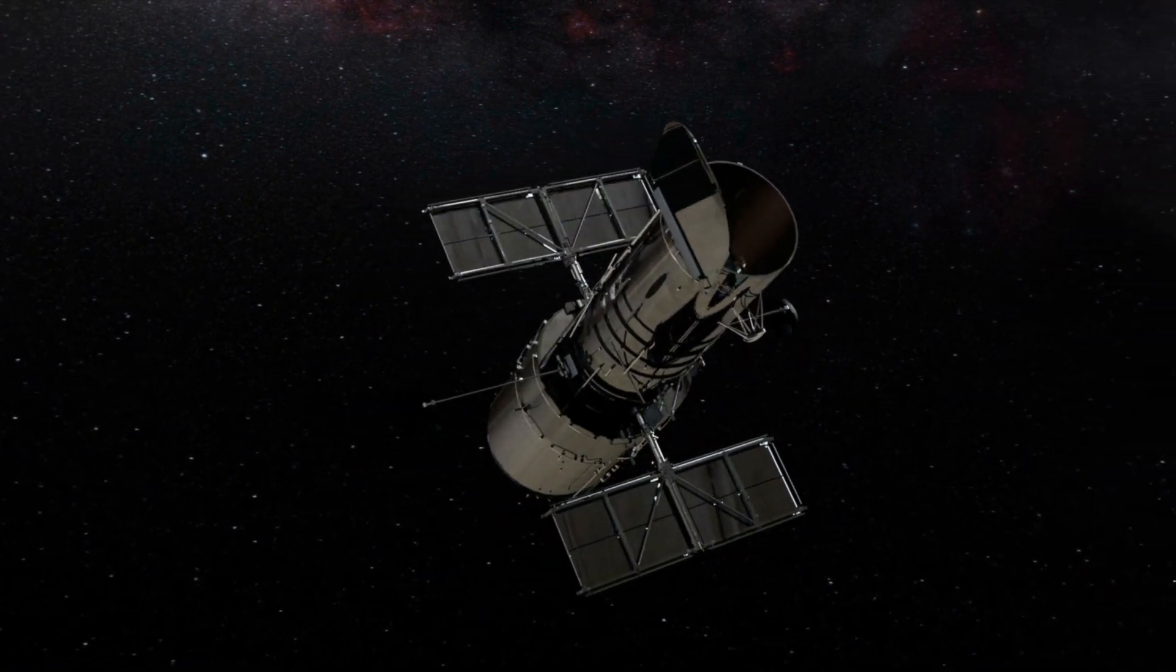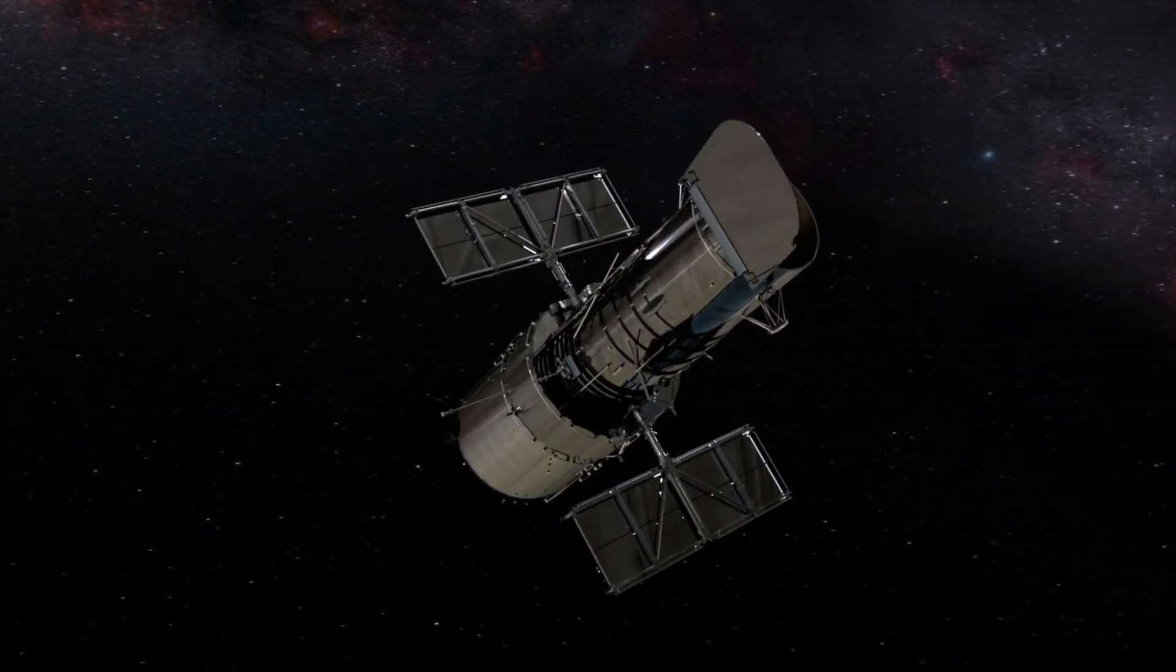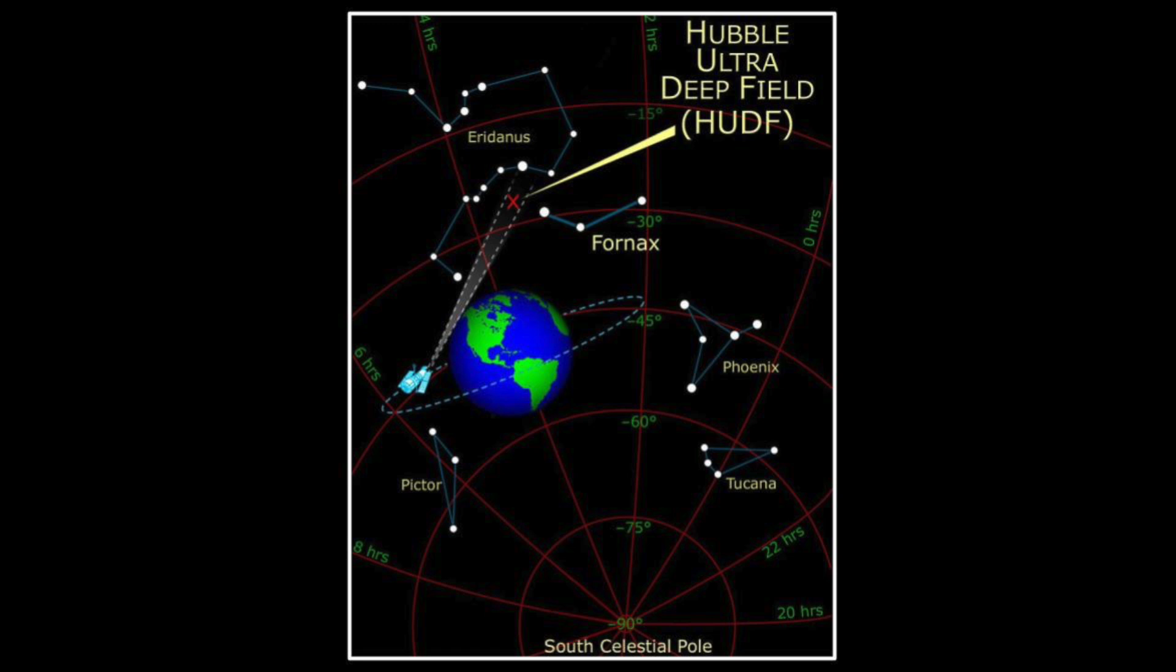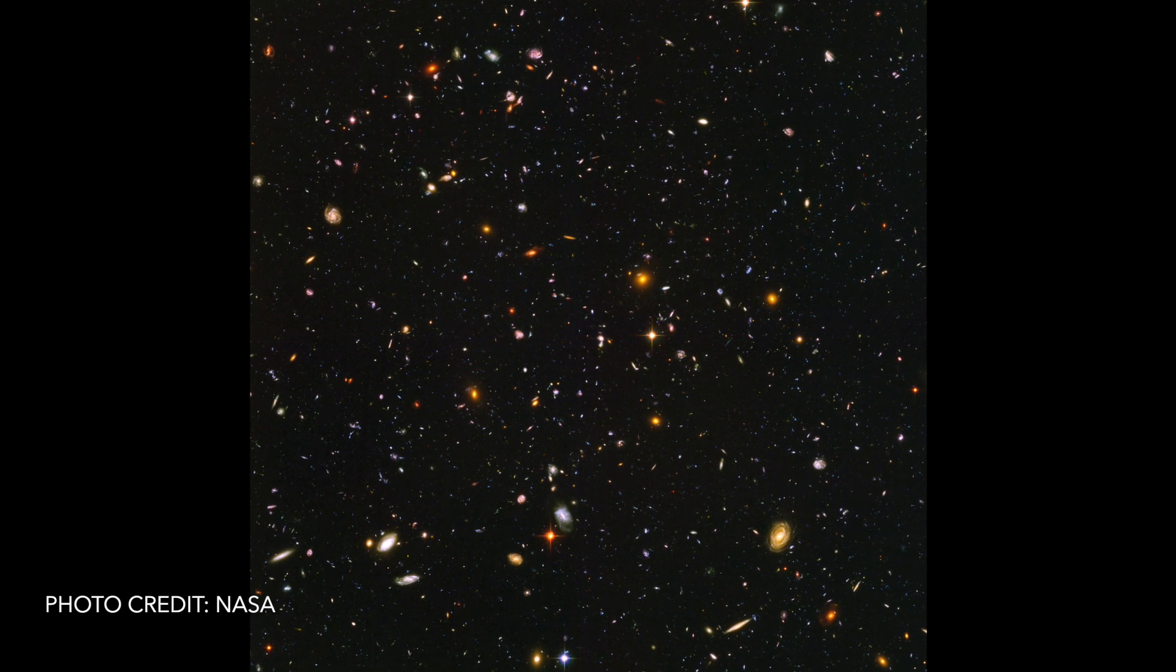Over 11 days between 2003 and 2004, the Hubble Space Telescope focused on another small, seemingly empty patch of sky in the constellation Fornax, uncovering nearly 10,000 galaxies with a range of shapes, sizes, and ages.